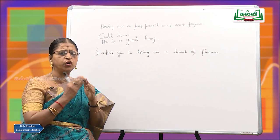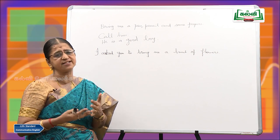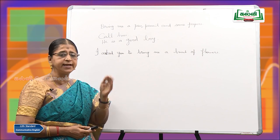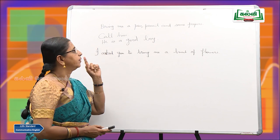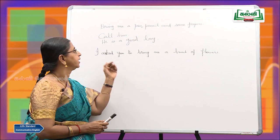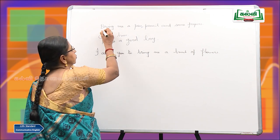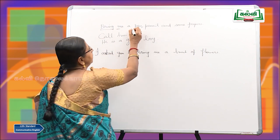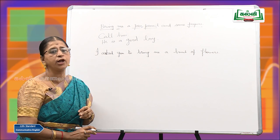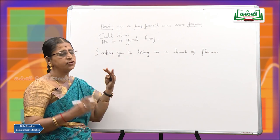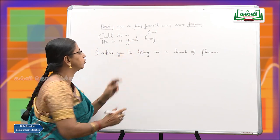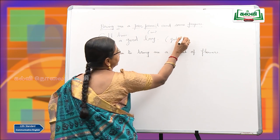In sentences, we do not give force to each and every word — that would take ages to pronounce. In the rapid flow, only certain words are pronounced with greater audibility and the rest with a mild tone. For example: 'Bring me a pen, pencil and some papers' — the most prominent words are the content words. 'Call him' — 'him' is sort of merged with 'call,' so it sounds like 'call im.' 'He is a good boy' — 'a' is not very prominent, it sounds like 'He's a good boy.'